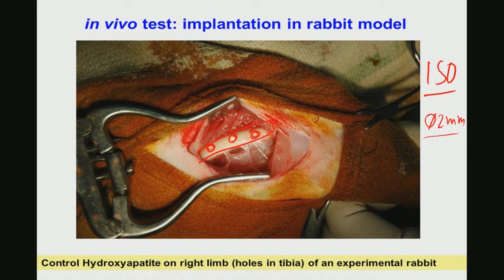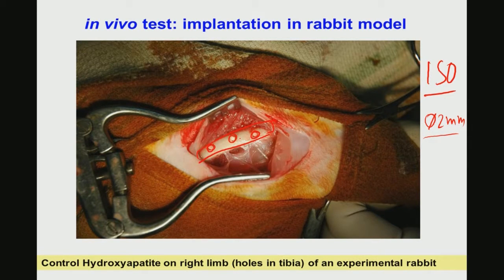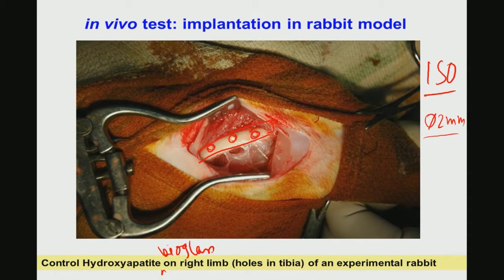After implantation, you observe the natural behavior of the animal, monitor weight change, and check for any abnormal activity or inflammation, which can be seen from macroscopic view. After the desired time period, you can sacrifice the animal as approved by the institutional animal ethical committee. This shows that this procedure can be done for hydroxyapatite bioglass as well, and in every preclinical experiment you must use a control implant.